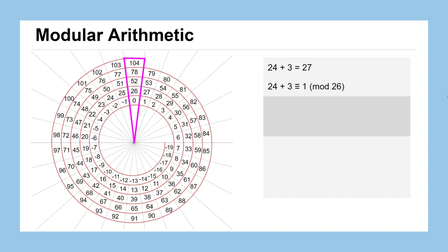Let's look at a few other examples here. In this pink wedge that we've highlighted, we could say like 24 plus 2 would land us on 26, or we could say it's equivalent to 0. But all of these numbers are actually equivalent to 0: 104, 78, 52, 26, and 0, assuming we're working in mod 26.